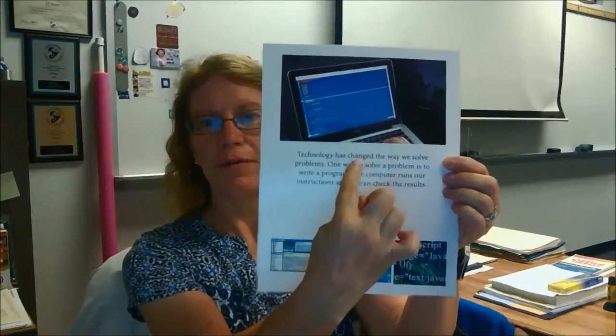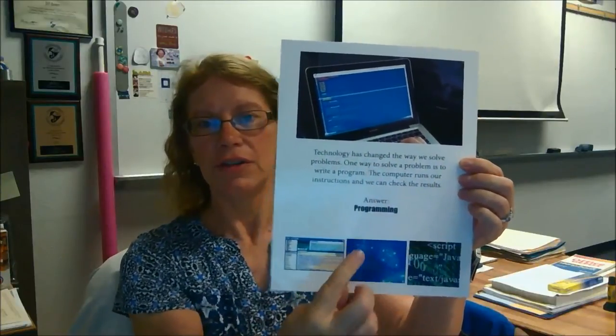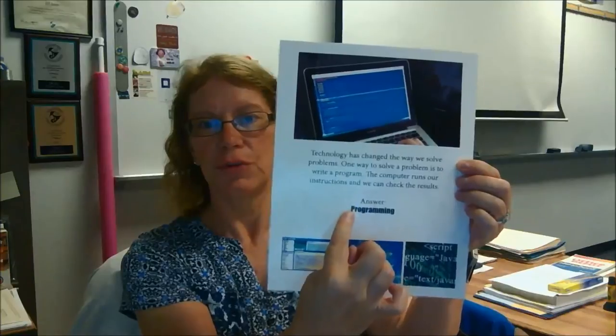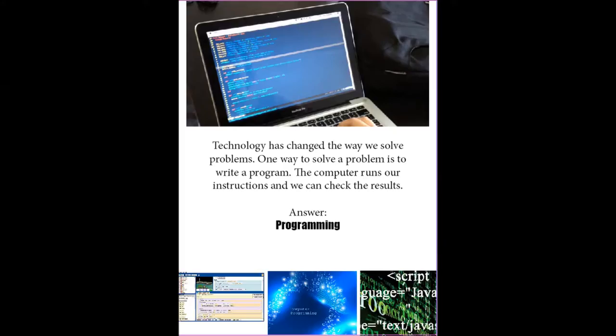If you read the paragraph here, it's going to give you some clues, and then the answer is what you're going to put. So this paper says: Technology has changed the way we solve problems. One way to solve a problem is to write a program. The computer runs our instructions, and we can check the results. Answer: programming.